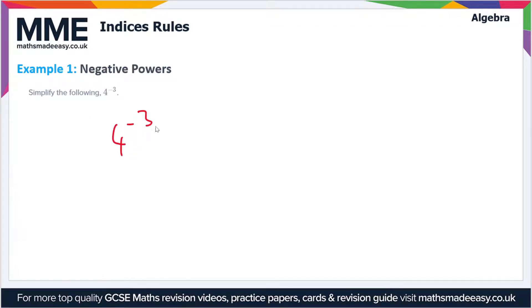We've got 4 to the power of -3. Whenever we have a negative power, we put one over the variable to the positive power, so we end up with 1 over 4³. This is equal to 1 over 4 times 4 times 4, which is 1 over 64.